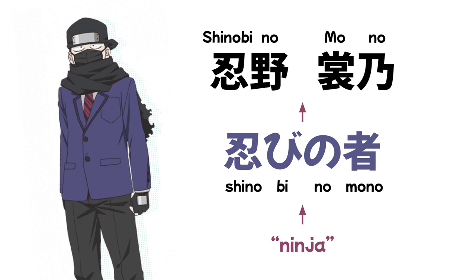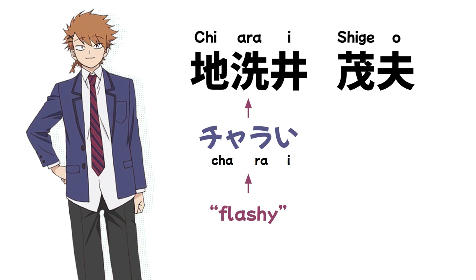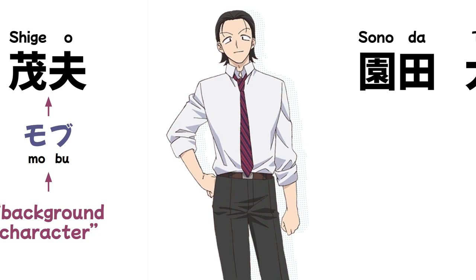One of his best friends is Chiharai Shigeo. 'Chiharai' is a pun on the word 'Charai,' meaning 'flashy,' possibly alluding to his unique sense of style. The kanji in 'Shigeo' can also be read as 'Mobu,' meaning 'background character' — a little harsh, but he really is a flashy background character.